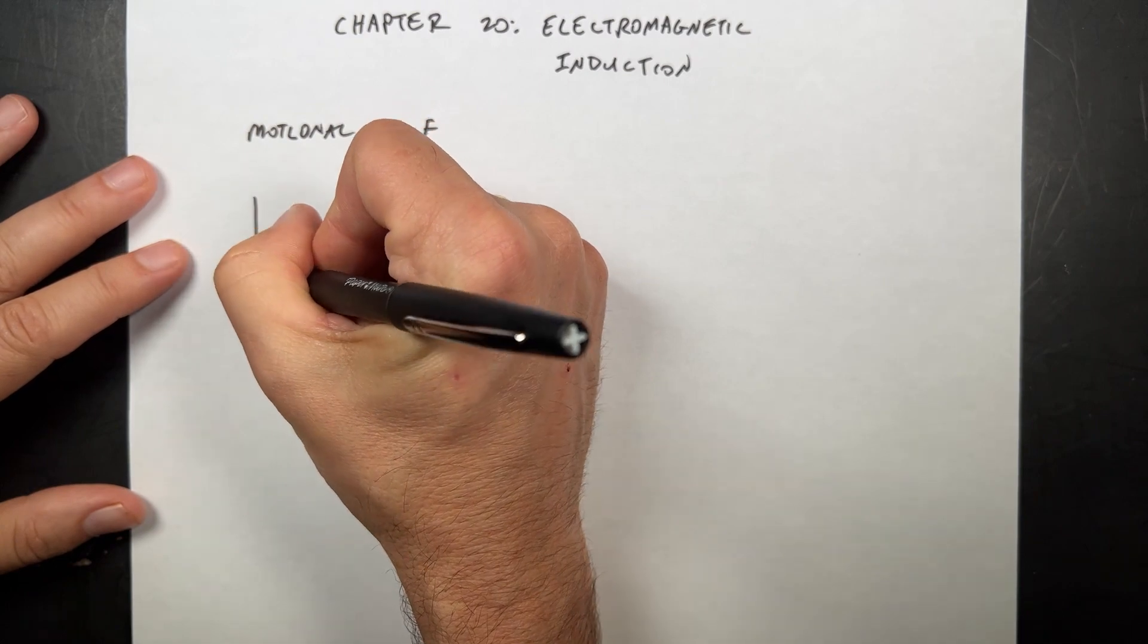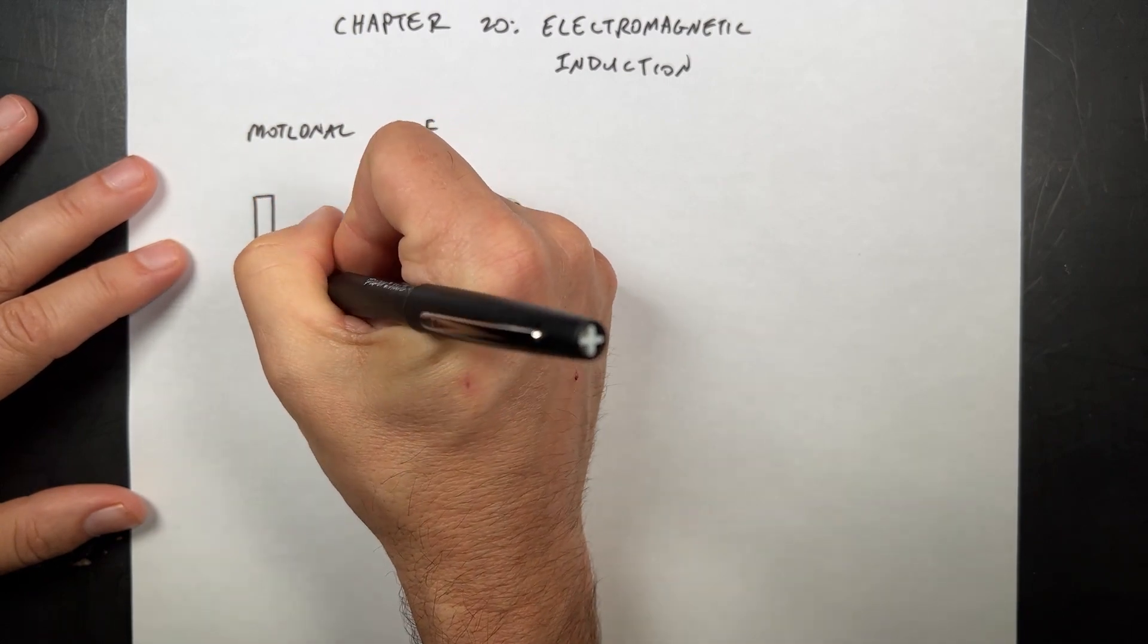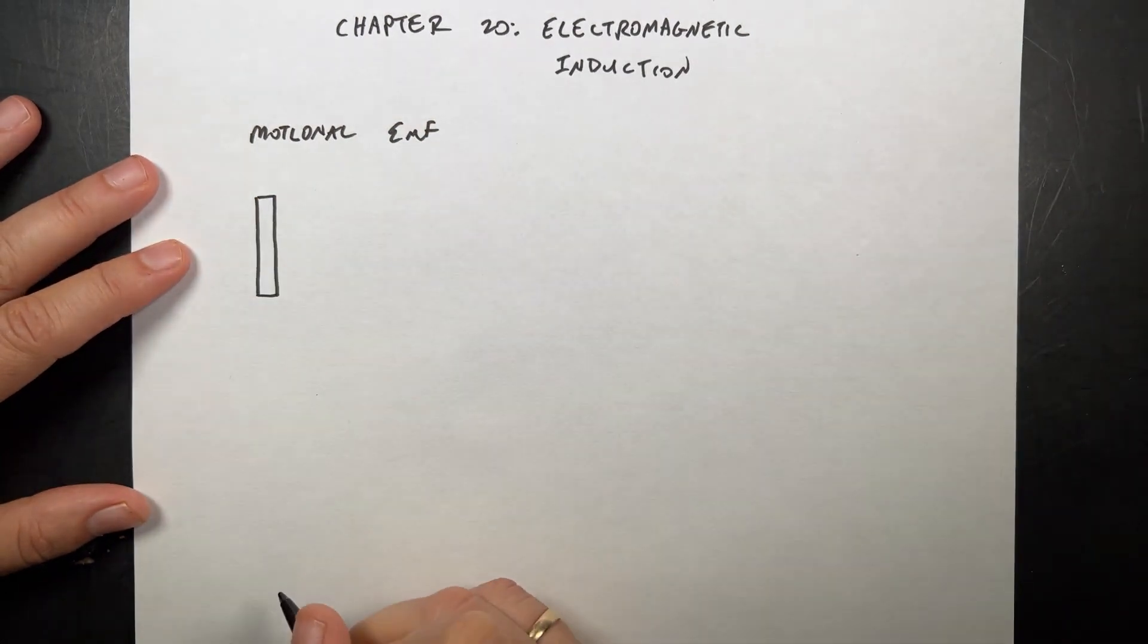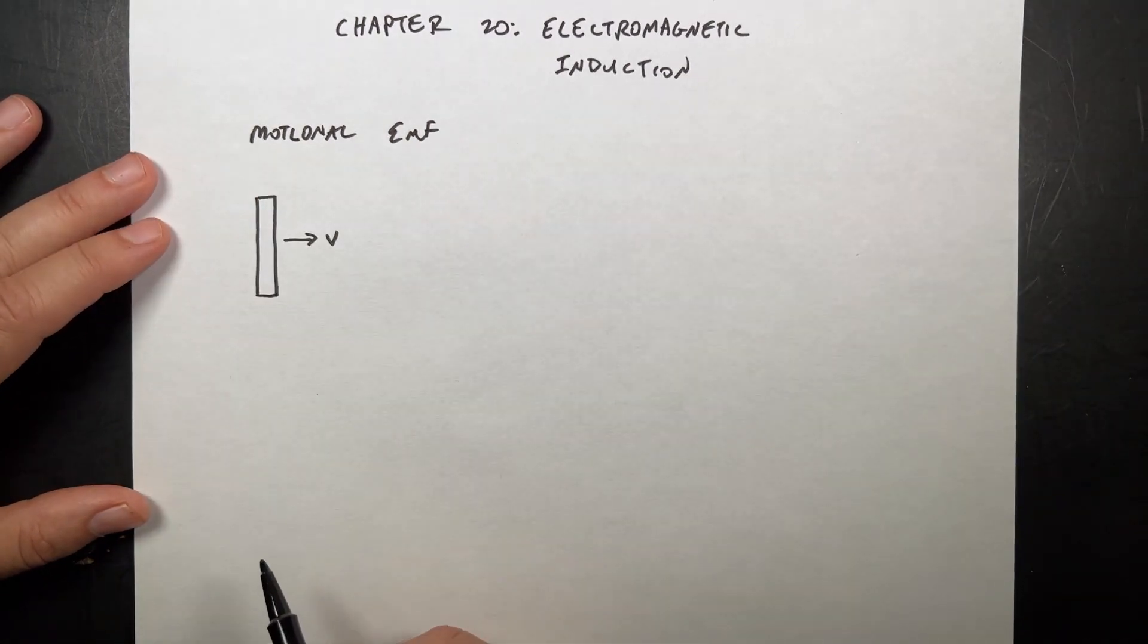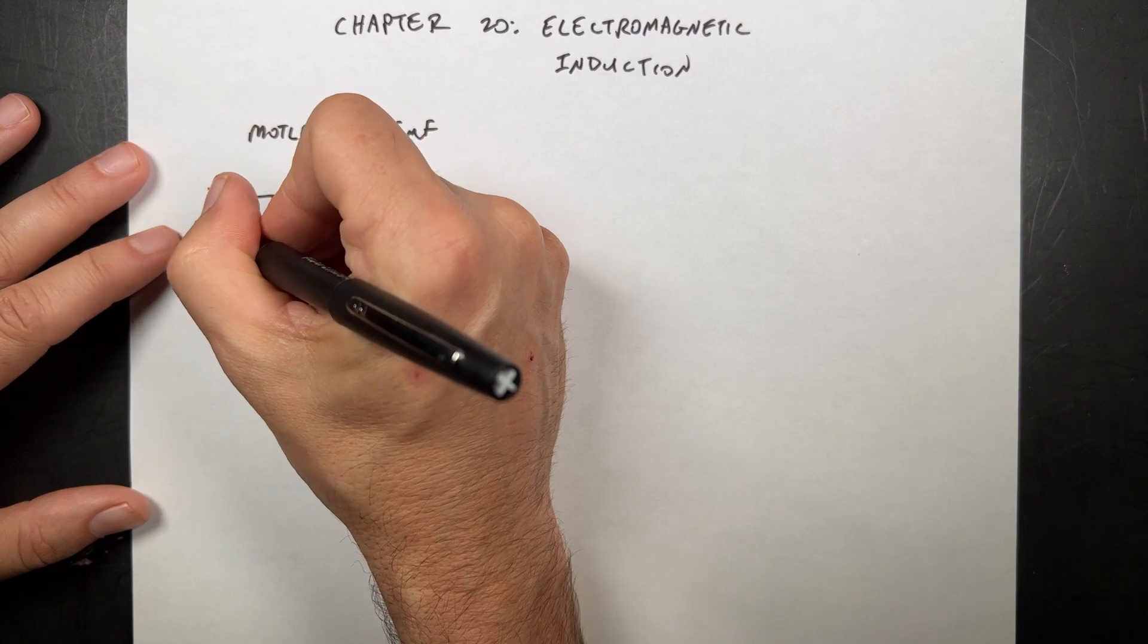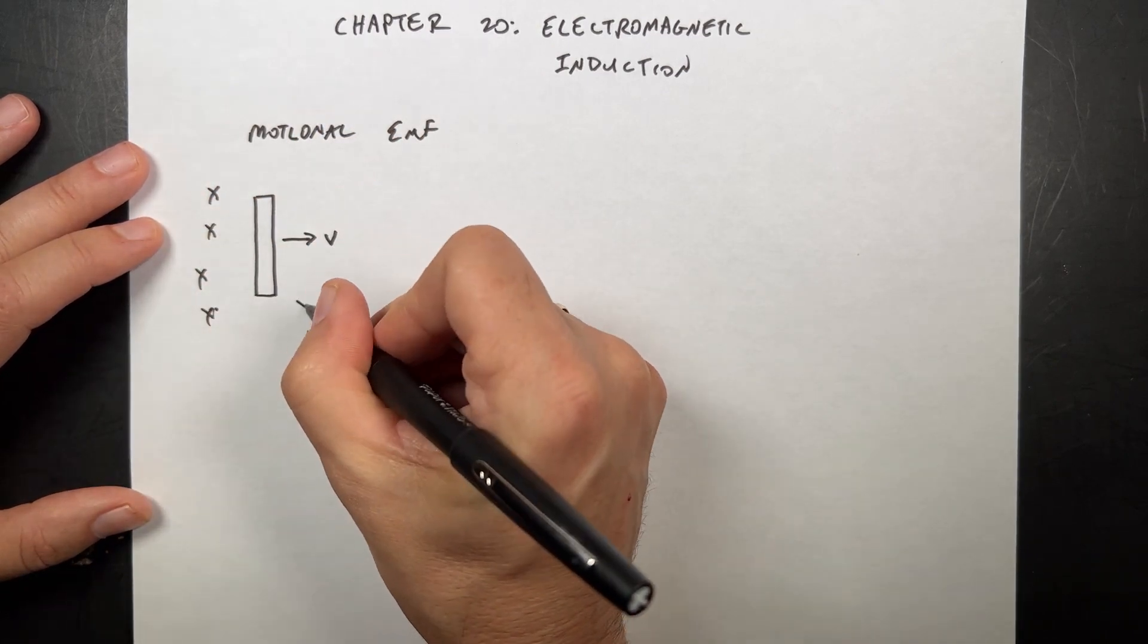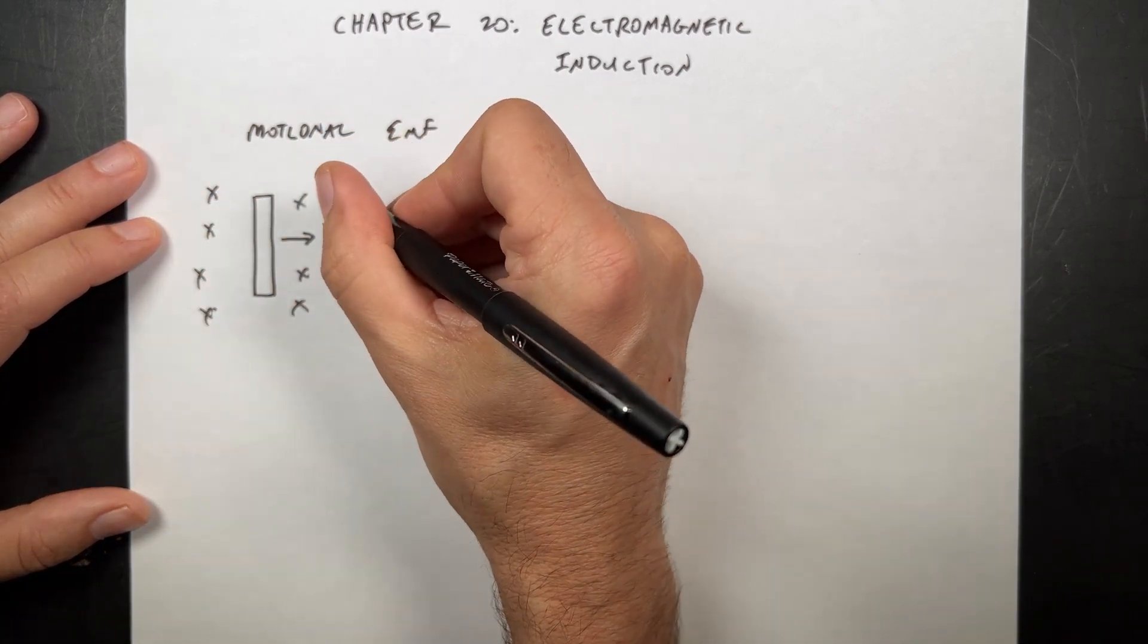So let's do this. Imagine that I have a bar, a metal bar, like that. And I'm moving with a velocity V that way. And there's a magnetic field in this region going into the paper, like that. That's B. That's V.